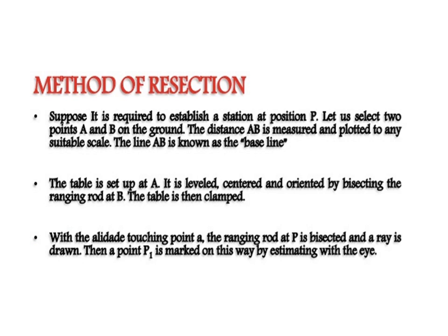In the method of resection, suppose it is required to establish a station at position P. Let us select two points A and B on the ground. The distance AB is measured and plotted to any suitable scale. The line AB is known as the baseline. The table is set up at A, leveled, centered and oriented by bisecting the ranging rod at B, then clamped. With the alidade touching point small a, the ranging rod at P is bisected and a ray is drawn. A point P1 is marked on this ray by estimation.